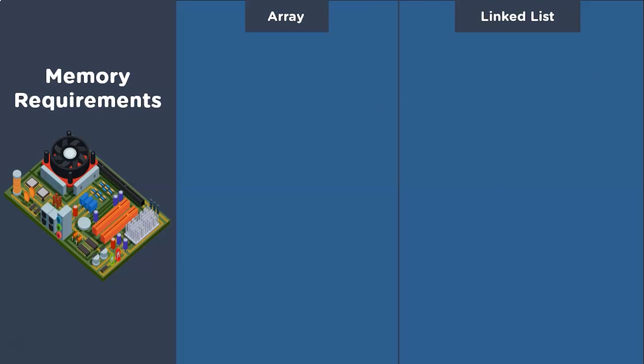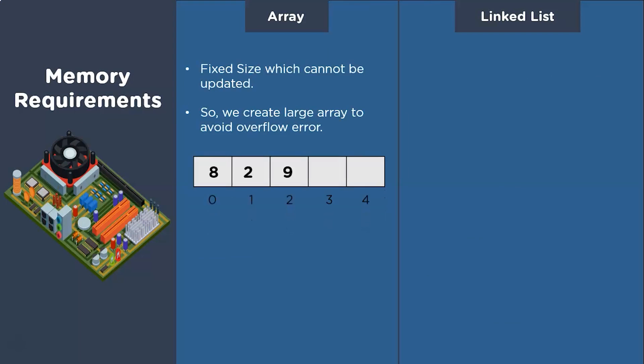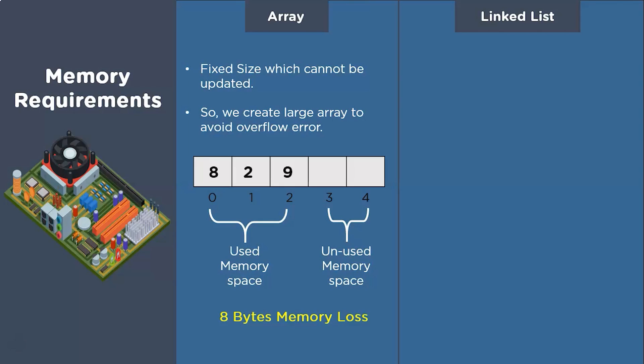Now, the second parameter that we want to talk about is memory usage. In the case of an array, we need to declare its size at compile time, which means we will have to know the size of an array before even creating it. Hence, to avoid an overflow error, what we typically do is we create a large enough array to store all the elements. For example, in this particular case, we have only 3 elements to store, but we create an array with size 5 to remove overflow error. While we achieve to do that, we waste 8 bytes of memory as we have 2 empty fields in our array.